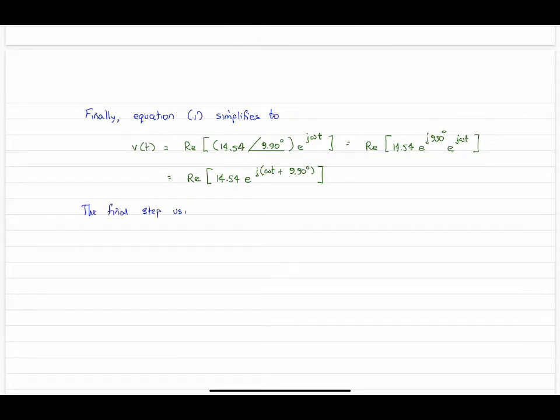Final step, we're done. Using Euler's identity once again in reverse, essentially. Once again, real part of e^(jx) is cos x. Our answer: 14.54, that's the magnitude, ωt plus 9.90, that's the phase. This is what we refer to as our time domain expression, v(t).